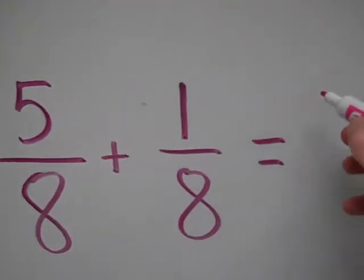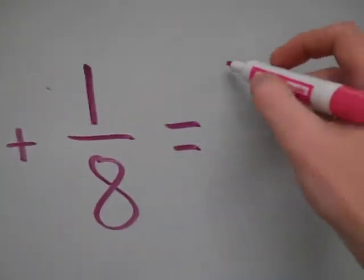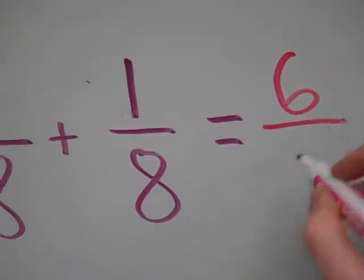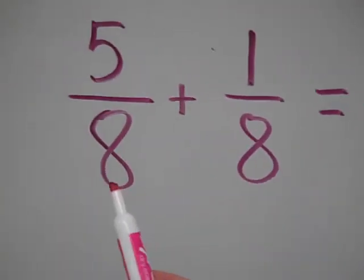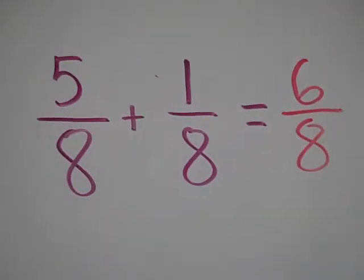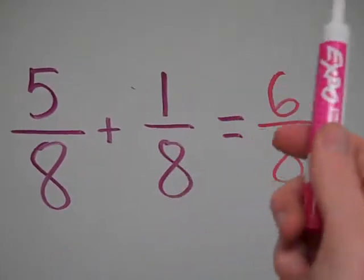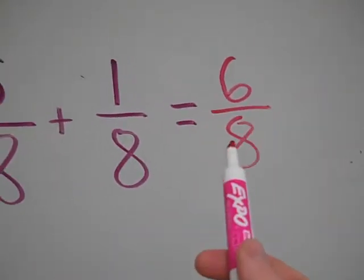So all you have to do is just add their numerators up. 5 plus 1 is 6, and then their denominator is going to stay the same, you're adding eighths. The denominator just describes what type of fraction it is. So I have 5, and I have 1, and now I have 6. 5 eighths, 1 eighth, 6 eighths.